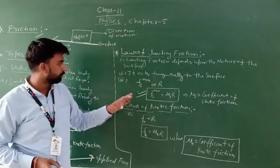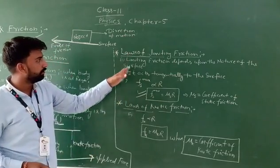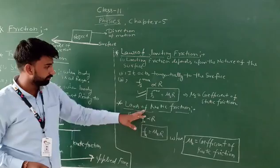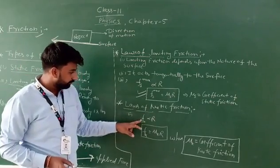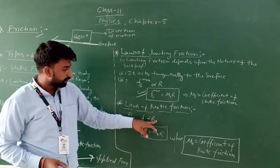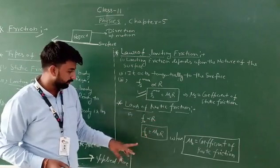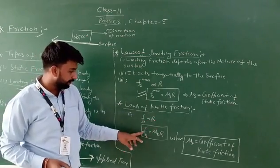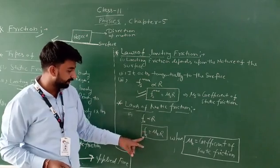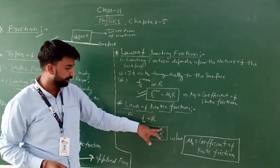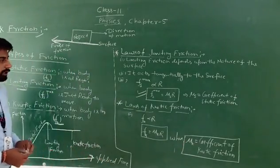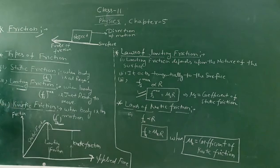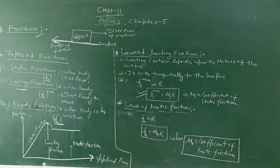All the laws of limiting friction are also the same for kinetic friction. Kinetic friction is directly proportional to the normal reaction. We can write F_k equals mu_k into R, where mu_k is the coefficient of kinetic friction. This covers the law of friction, the law of limiting friction, and the law of kinetic friction.